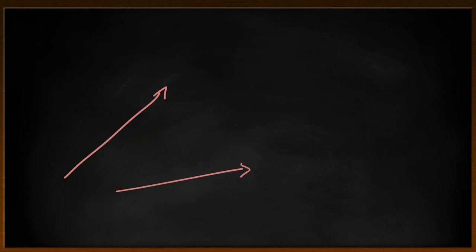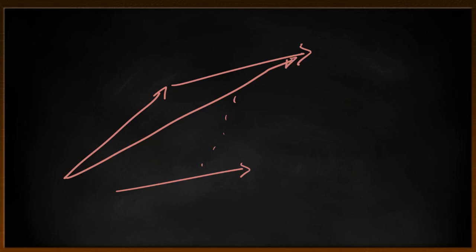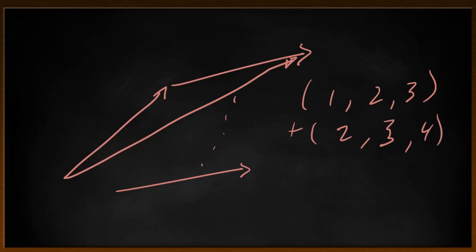So we take a vector; if you want to add that to another vector, we line them up head to tail and connect tail to head, and that's our sum. We can also do this algebraically: say (1, 2, 3) added to (2, 2, 3, 4) — wait, (1, 2, 3) plus (2, 2, 4) — we get (3, 5, 7). That's a well-known formula.